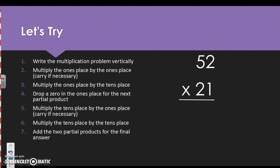Let's try another one. We multiply the ones times the tens. 1 times 5 is 5, we drop a 0. Next we multiply the tens times the ones. So 2 times 2 is 4. Then we multiply the tens times the tens. 2 times 5 is 10.